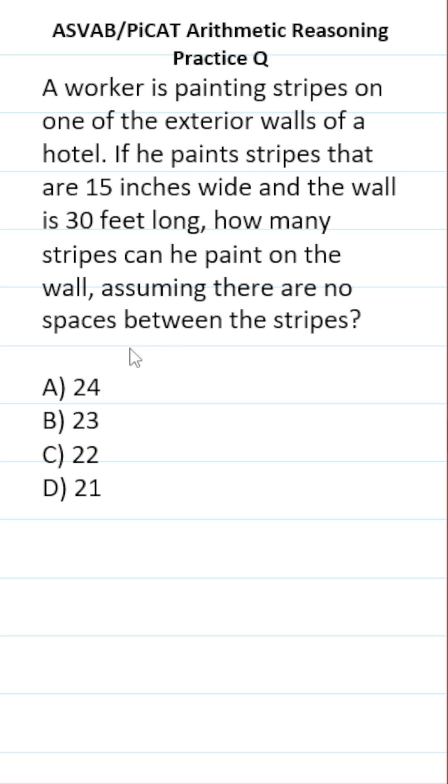Most of you would say we're going to do 30 feet, that is the length of the wall, divided by 15 inches, that is the width of each of the stripes. That said, in order to do this math, we have to make a conversion. We're going to convert feet to inches more specifically, and for that you have to know there are 12 inches in every foot.